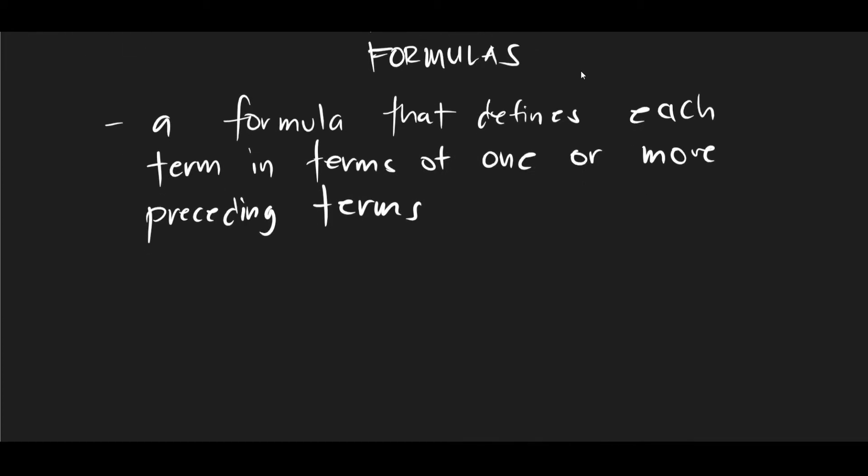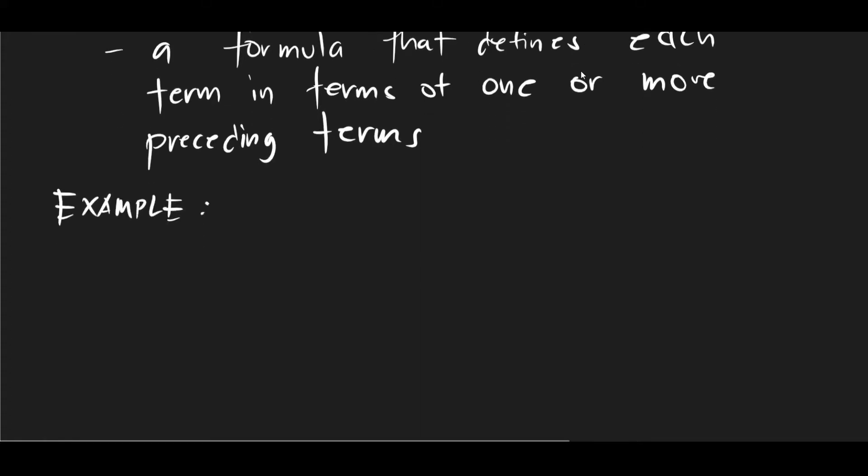So what is an example of this? Okay, so let's jump right into an example so we can understand this fully. Okay, so I have here an example. So we have here a1 is equal to 5, and then an is equal to 3 times a(n-1) plus 2, where n is greater than or equal to 2. Okay, so this is an example of recursion formula.